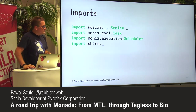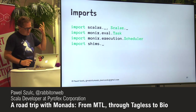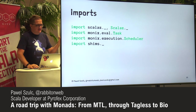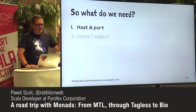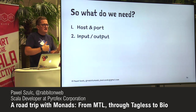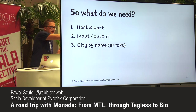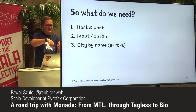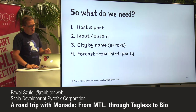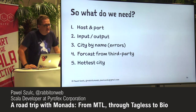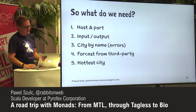Some imports are necessary. I'm using Monix for IO and ScalaZ, and Daniel Spiewak's shims to align the two since Monix uses Cats and ScalaZ is ScalaZ. In order to build our application, we need: ability to fetch the host and port from configuration, ability to handle input/output (ask the user for input and print results), ability to go from a city name to an actual city (with error handling since users might type arbitrary things), ability to call our third party, and ability to reason about the hottest city — all done in an FP way.